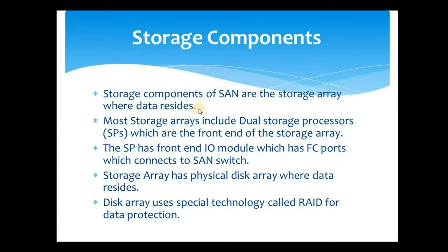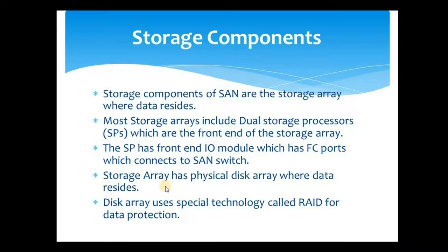The storage component of SAN is the storage array where the data actually resides. All storage arrays have dual storage processors (SPs), which are the front end of the storage array. These SPs have front-end IO modules with FC ports that connect to the SAN switch. The data physically resides on the physical disks inside the storage array. The disk array uses a special technology called RAID — Redundant Array of Independent Disks — for data protection, so that if a disk fails, data can be recovered from other disks. There are many RAID types, and the appropriate one is selected based on requirements.